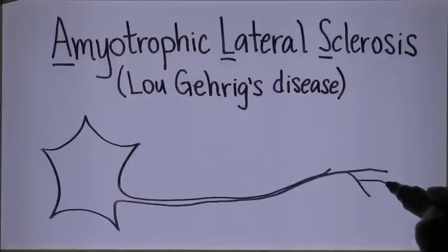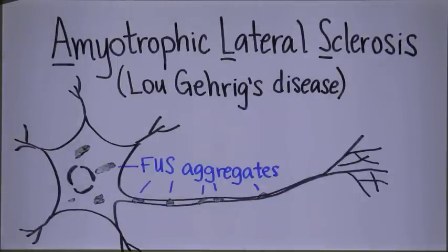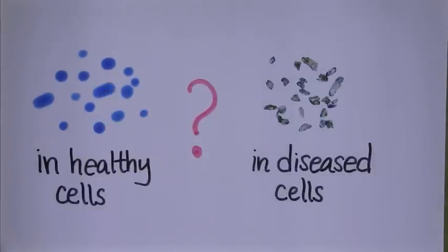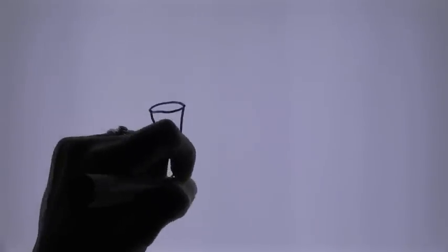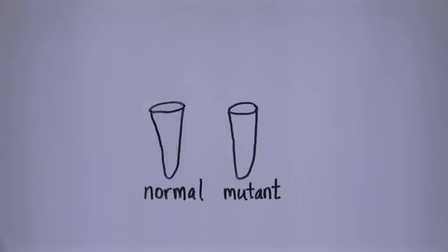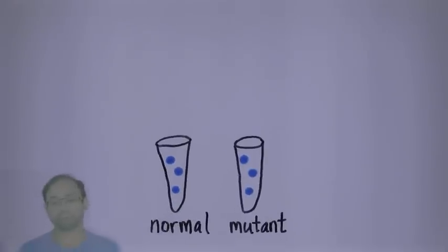In patients with ALS, FUS forms aggregates in motor neurons. So if FUS behaves as a liquid in healthy cells, why does it form aggregates in disease cells? We made versions of FUS that contain the same mutations that are found in ALS patients. However, we were a bit disappointed that in a test tube, the mutant proteins behave exactly the same as the normal proteins.